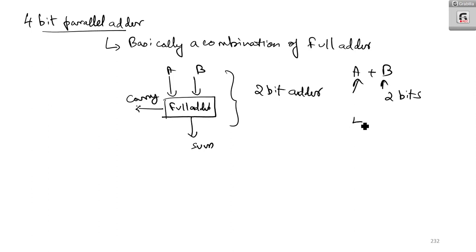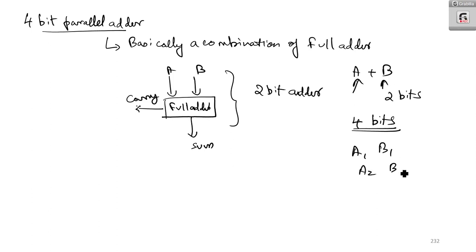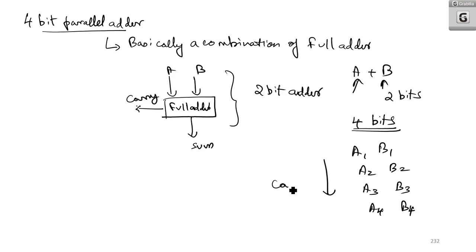Now if there are 4 bits to add, you will have A1, B1, A2, B2, A3, B3, and A4, B4. You have 4 bits to add, and again the carry has to be propagated. The carry coming in has to be propagated.